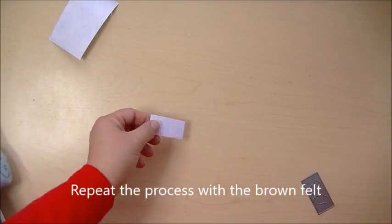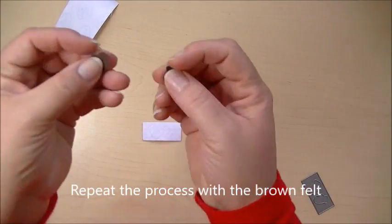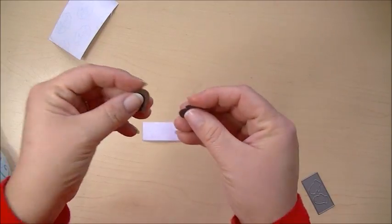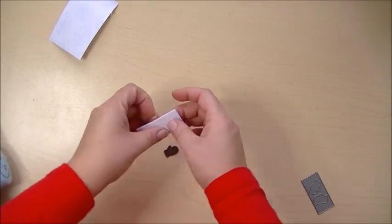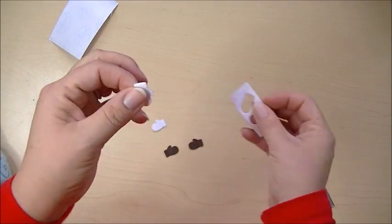So let's clear this stuff out of our way. I've already cut out a pair of mittens the same way using the brown felt. And then these are just going to pop right out like this.